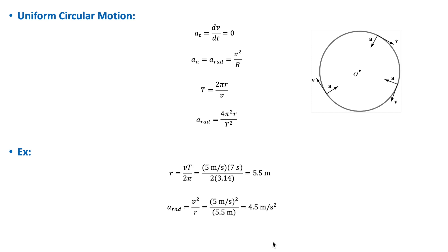Let's consider an example. Suppose that in a fun fair ride, the passengers rotate in a circle with a constant speed of 5 meters per second, and the period of revolution is 7 seconds. We want to find the total acceleration of a passenger in the ride. Because the speed is constant, the passenger is in uniform circular motion. So, the total acceleration is just the normal or centripetal acceleration. We first find the radius of the circular path, which is 5.5 meters, and then the radial acceleration is 4.5 meters per second squared.